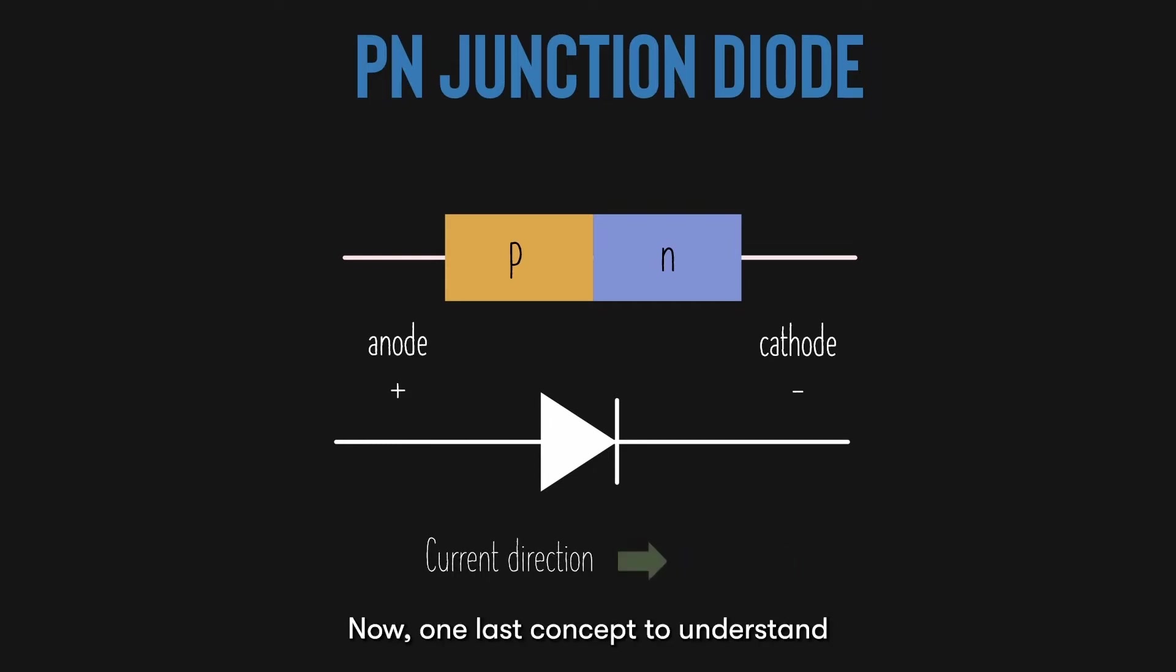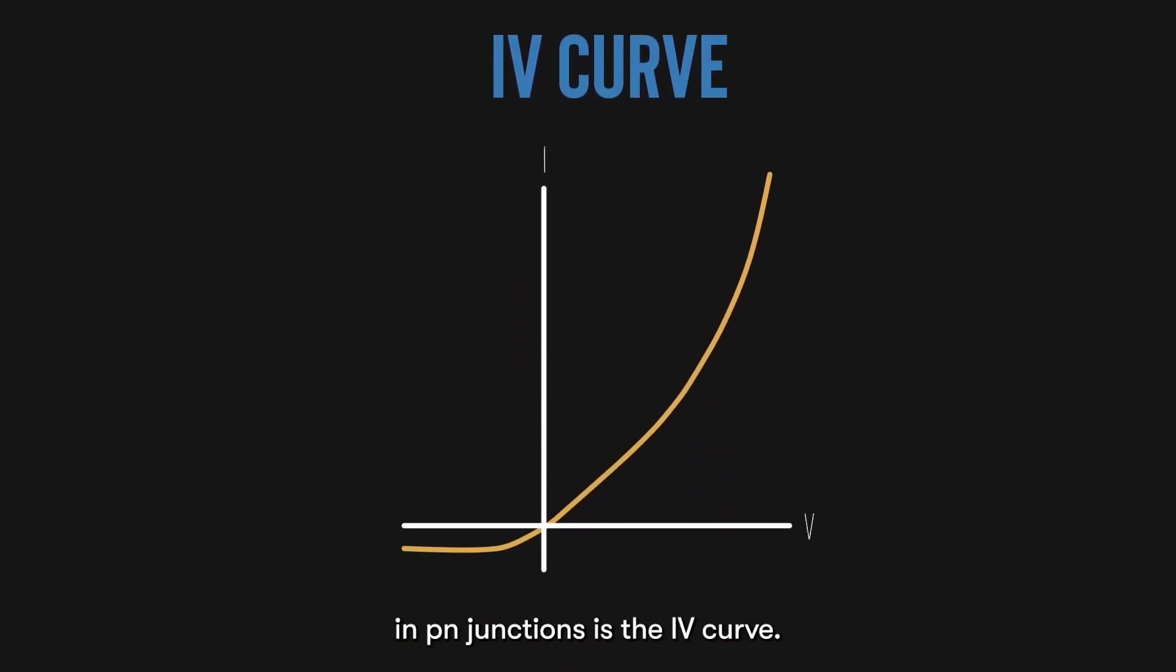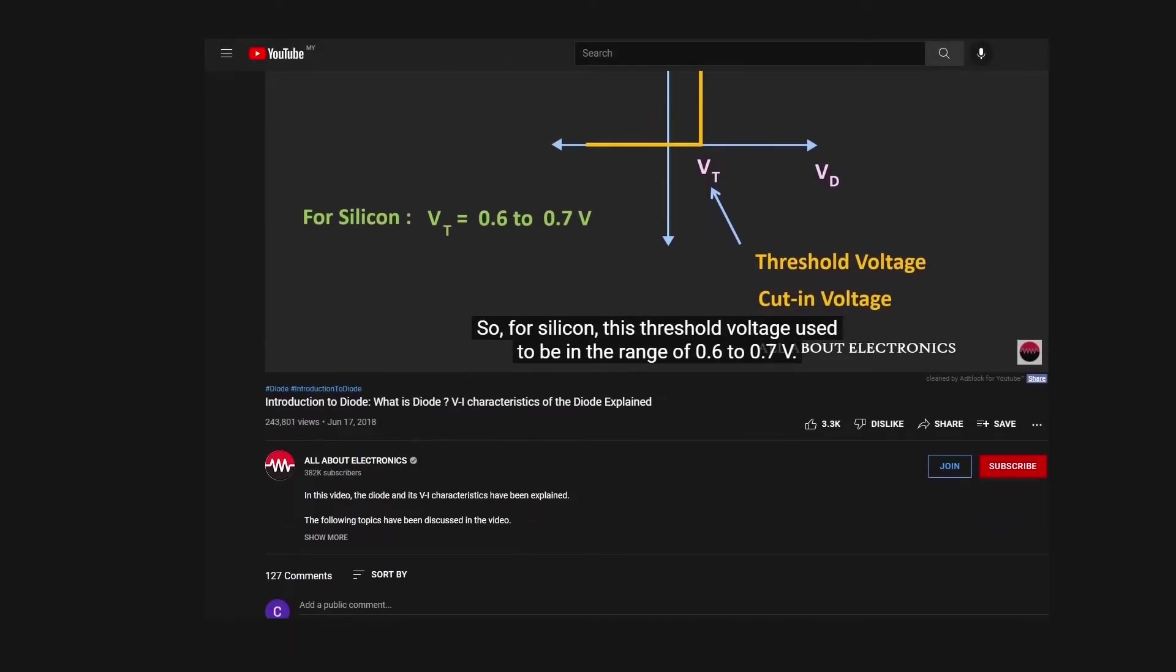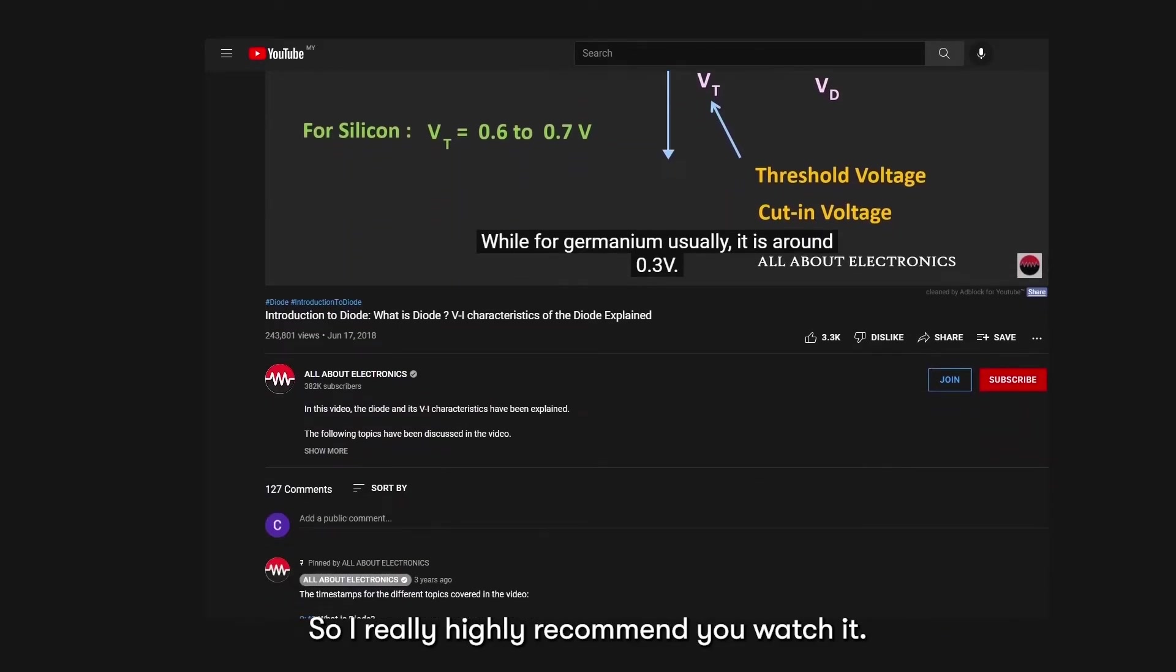Now, one last concept to understand in PN junctions is the IV curve. The IV curve is the bread and butter that every solar cell scientist must know how to read and interpret. The IV curve is simply a plot of current versus voltage in a diode. When I started learning about IV curves in diodes, I literally searched through hundreds of explanations. And so far, none can beat this YouTube explanation by All About Electronics. So I really highly recommend that you watch it.